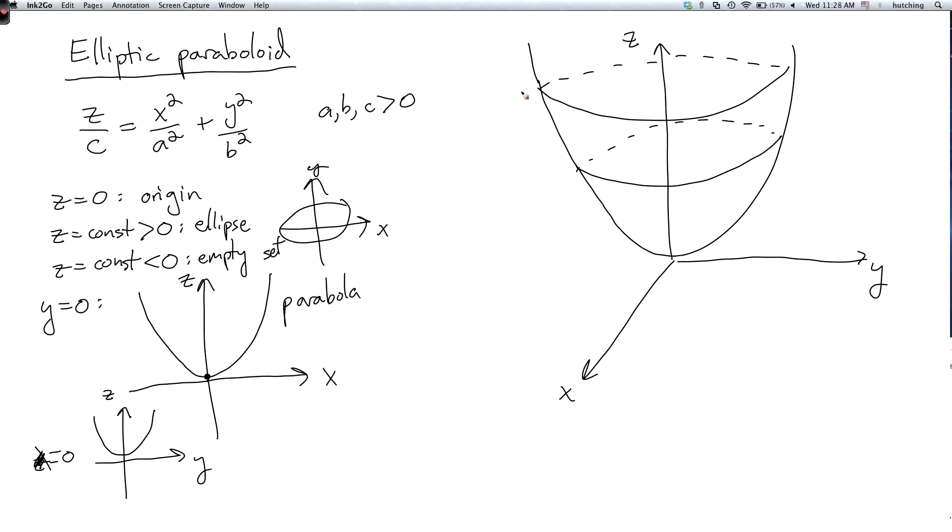This is not quite the surface of revolution of a parabola. It would be a surface of revolution if a and b are equal. Otherwise it's not quite a surface of revolution.